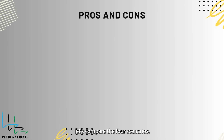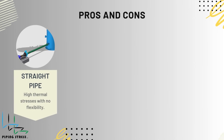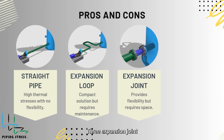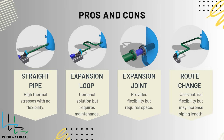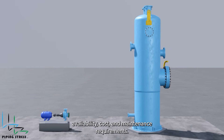To summarize, let's compare the four scenarios. One: straight pipe — high thermal stresses with no flexibility. Two: expansion loop — provides flexibility but requires space. Three: expansion joint — compact solution but requires maintenance. Four: pipe route change — uses natural flexibility but may increase piping length. Each solution has its pros and cons, and the choice depends on factors like space availability, cost, and maintenance requirements.